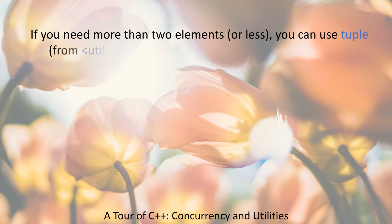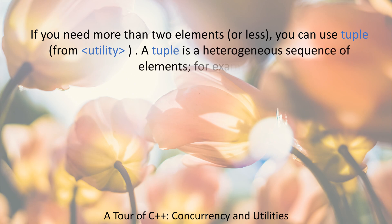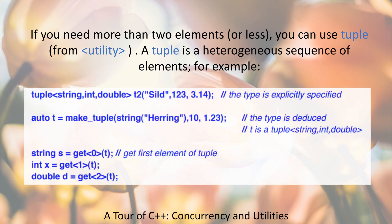If you need more than two elements, or less, you can use tuple, from <utility>. A tuple is a heterogeneous sequence of elements. For example: tuple<string, int, double> t2 {"sild", 123, 3.14};  // type is explicitly specified
auto t = make_tuple(string{"herring"}, 10, 1.23);  // type is deduced — t is a tuple<string, int, double>